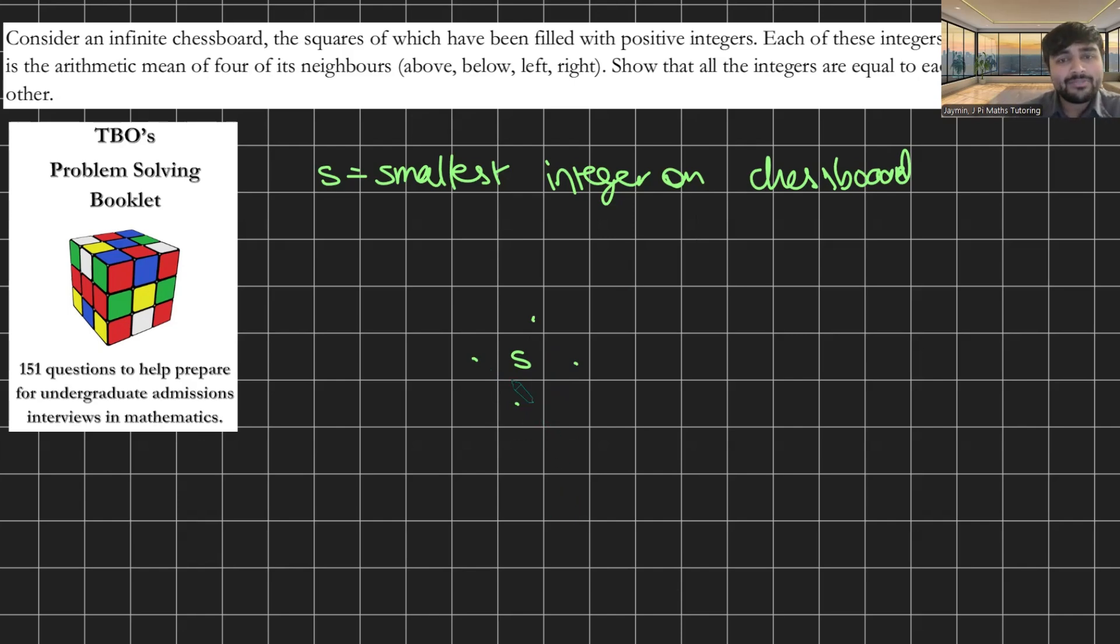Why is that? Well if any of them are not equal to S, let's say this guy, let's say this is called S plus three for example, in particular that's bigger than S. But in order then for these four to average out to be S, we must have then one element that is less than S in these three. Maybe this guy is S minus five. But that's a contradiction because S is supposed to be the smallest integer on the board. So the only way we can do this is by having all of the neighbours of S being S in order to avoid a contradiction.